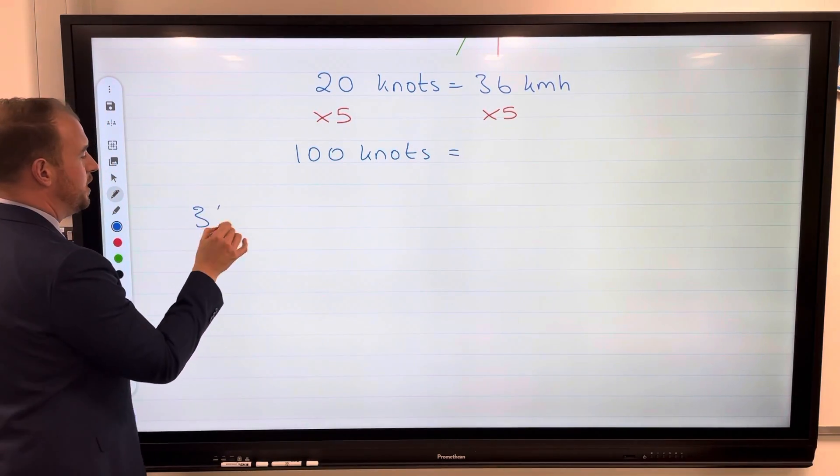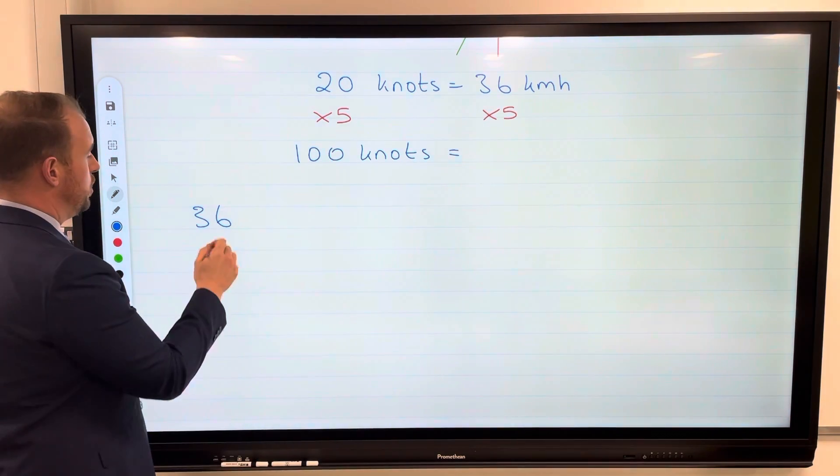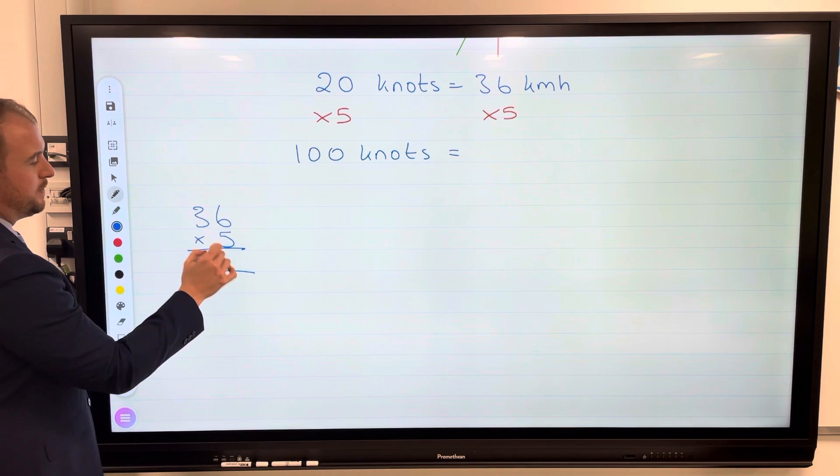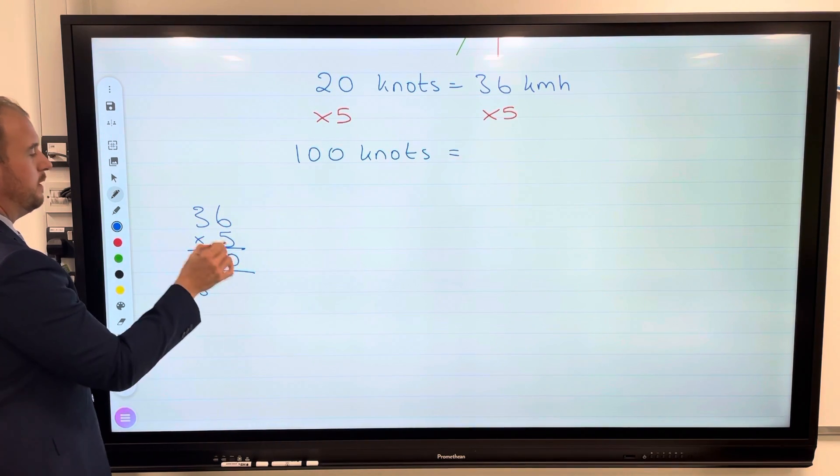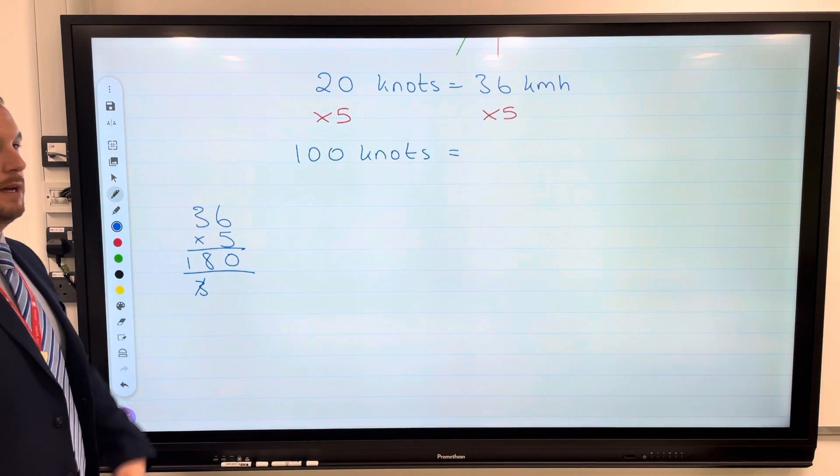So we'd have to do the same with that there, 36 times 5. You could use different methods. You could times it by 10 and then half it to get 180. You could use this more orthodox method, 6 times 5 is 30, 5 times 3 is 15, add the 3 for 18 to make 180.